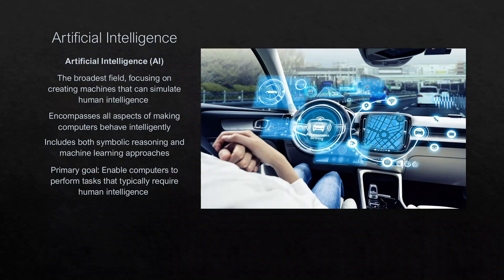Artificial intelligence is the grand ambition to make machines smart — to give computers the ability to perform tasks that typically require human thinking, like understanding language, solving complex problems, and making predictions. Whether it's your voice assistant like Siri or a self-driving car, that's all under the massive umbrella of AI. AI is the ultimate destination of creating intelligent machines — and machine learning is how we get there.